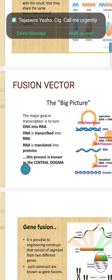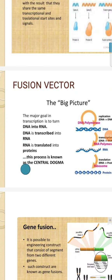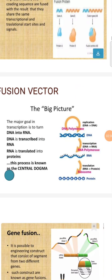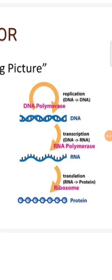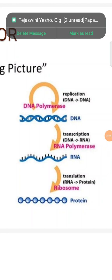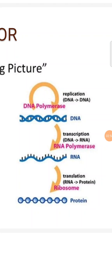The major goal in transcription is turning DNA into RNA. As we know from the central dogma of molecular biology, DNA is transcribed into RNA, and RNA is translated into protein. DNA polymerase is used for DNA replication, and RNA polymerase is used for transcription — converting DNA to RNA. After that, translation converts RNA into protein, with the help of ribosomes.